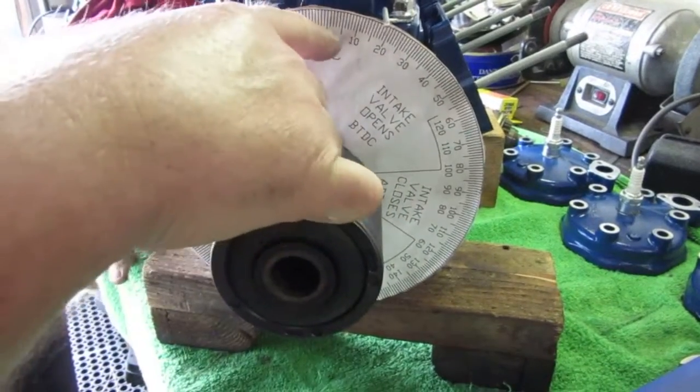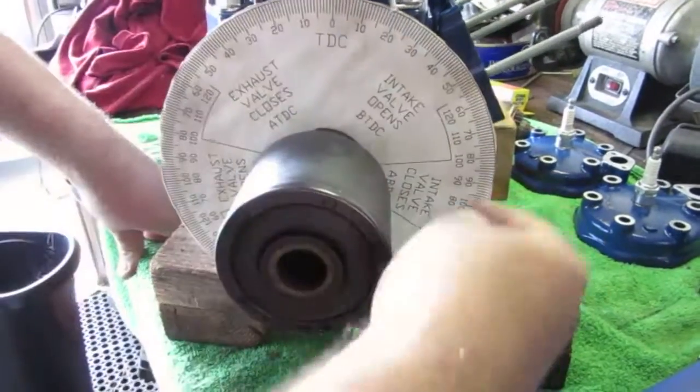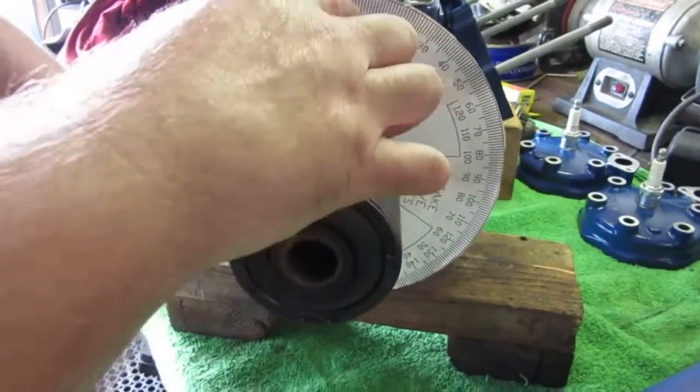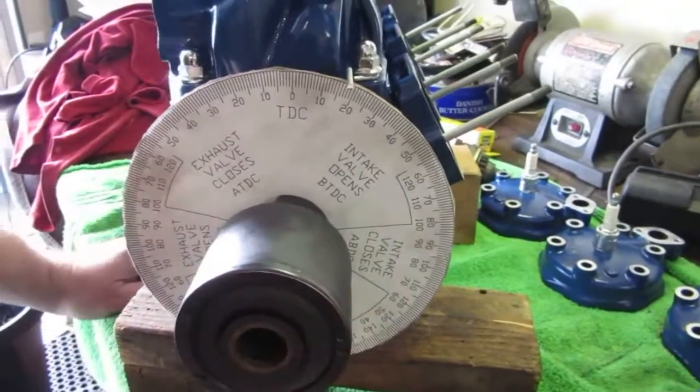And on a normal, you would get zero, 120, and then you would check at 240. So that's how it goes. Zero, 120, 240. Or you can go zero, 120, zero, 120. And that's how this degree wheel works. So the index on this crank is good.